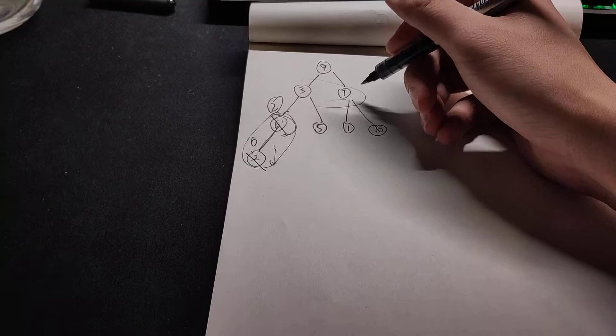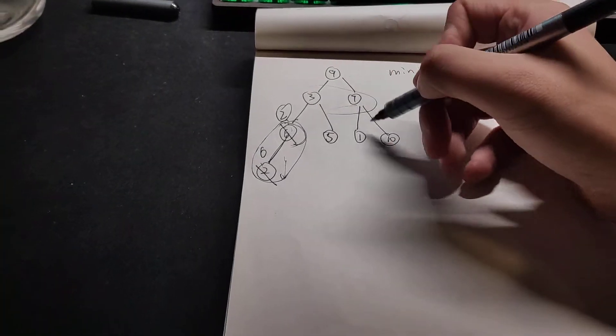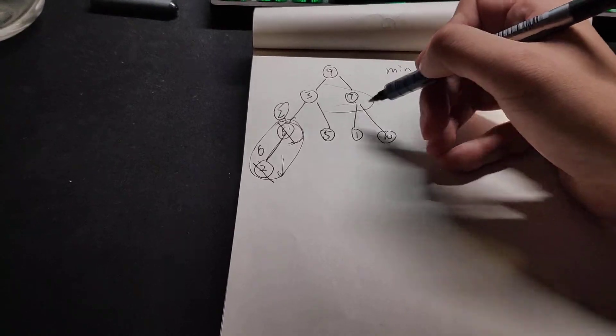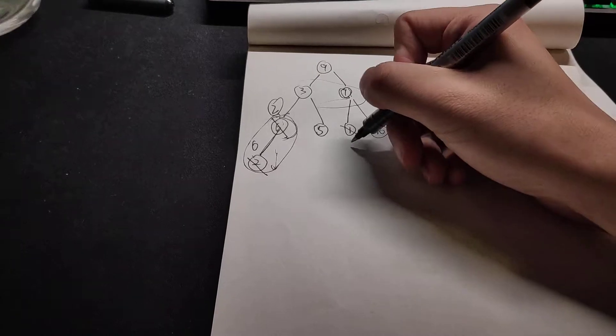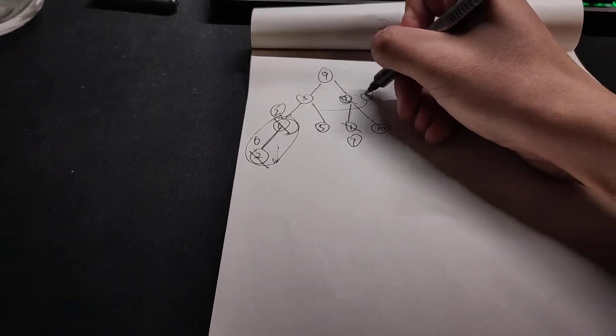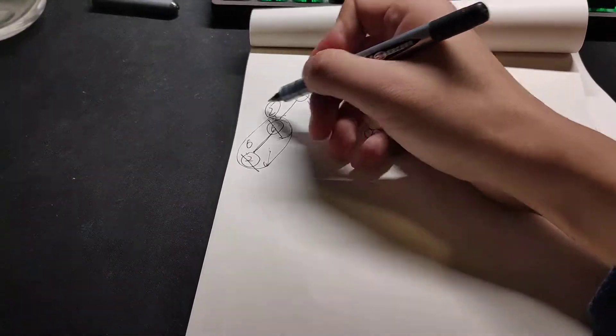By now we will go for the second level. So this one we will check here. Seven is larger than the one, so we will change the seven with the one. And here we will also change the three with the two.